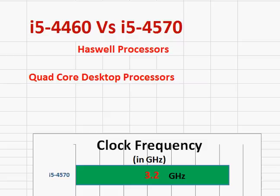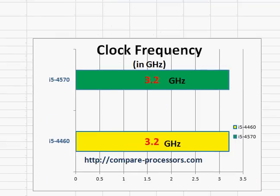Let's compare the Intel Core i5-4460 with the i5-4570, both belonging to the Haswell processor family. Both are quad-core desktop processors with good performance due to their four cores and the newer Haswell architecture. One thing to notice is that even though they have quad cores, they don't have hyper-threading.